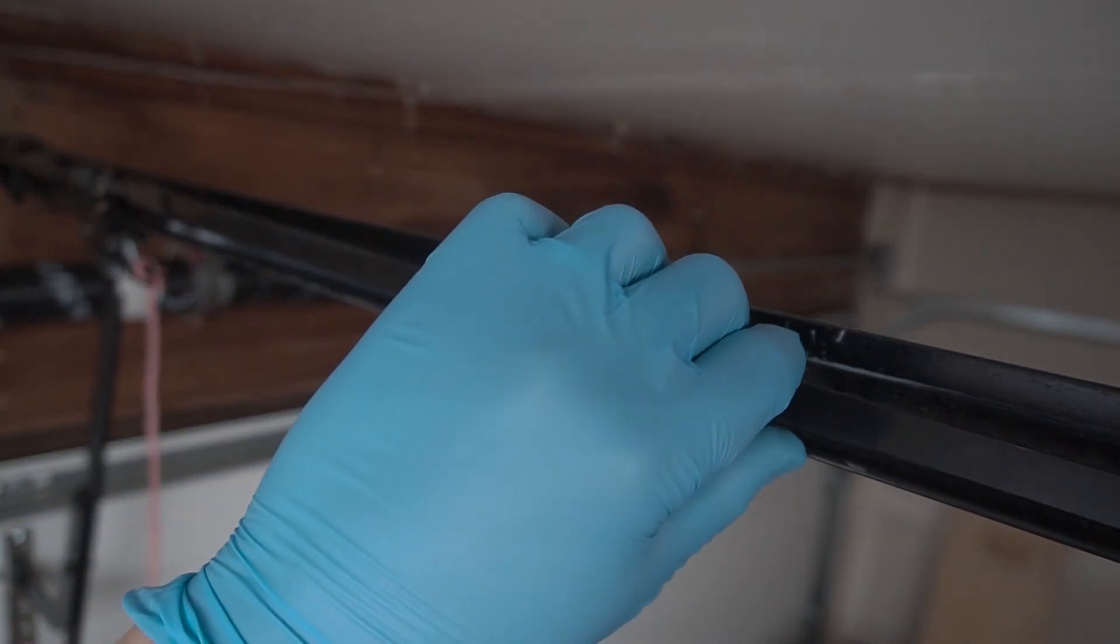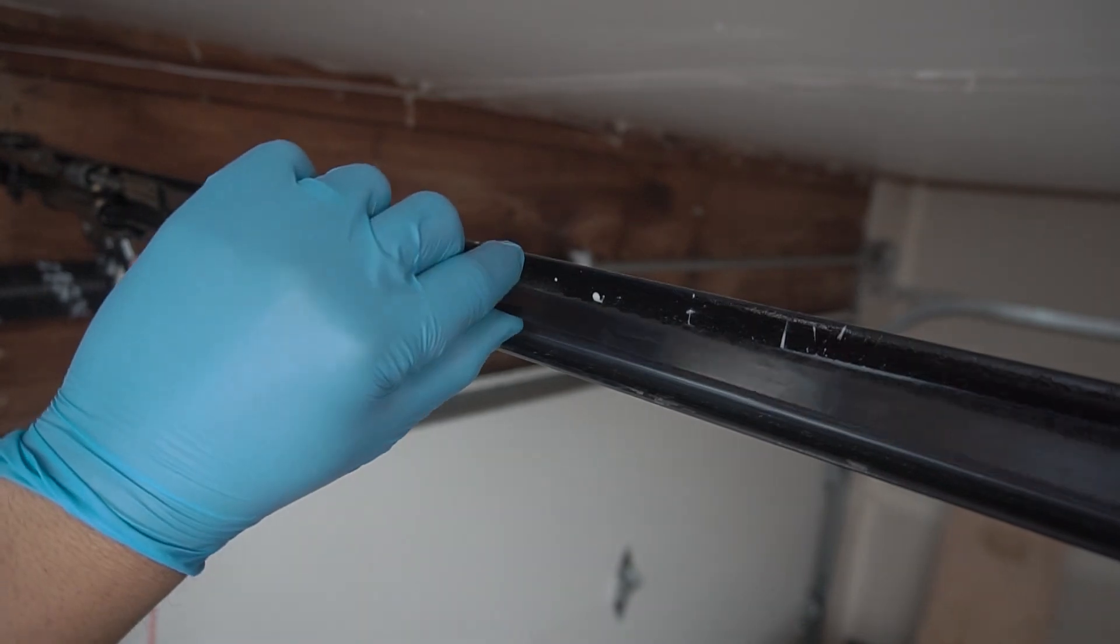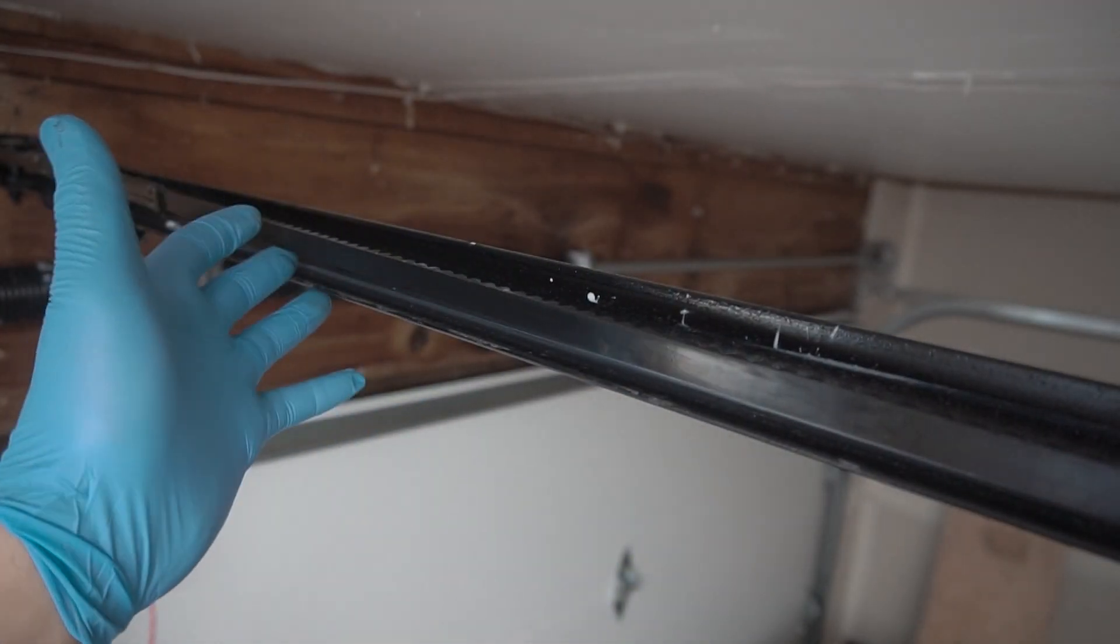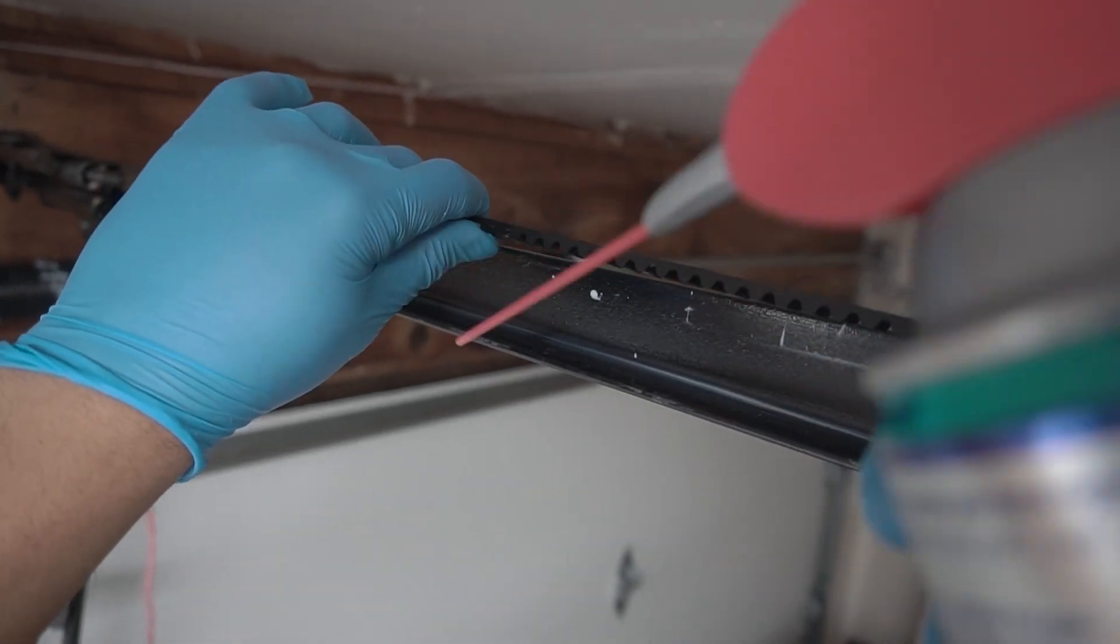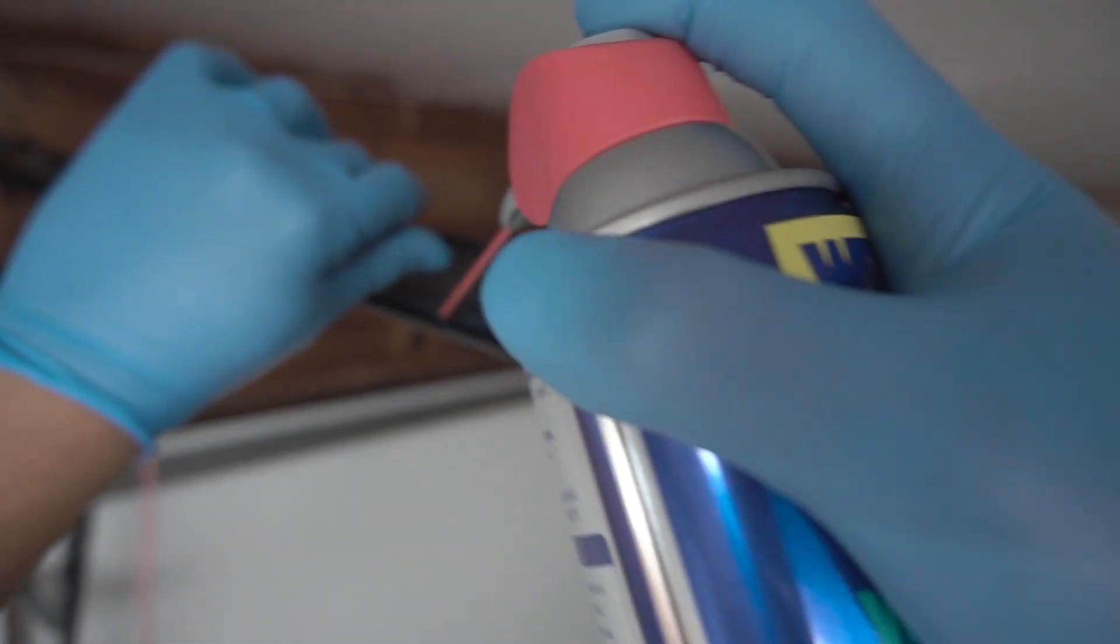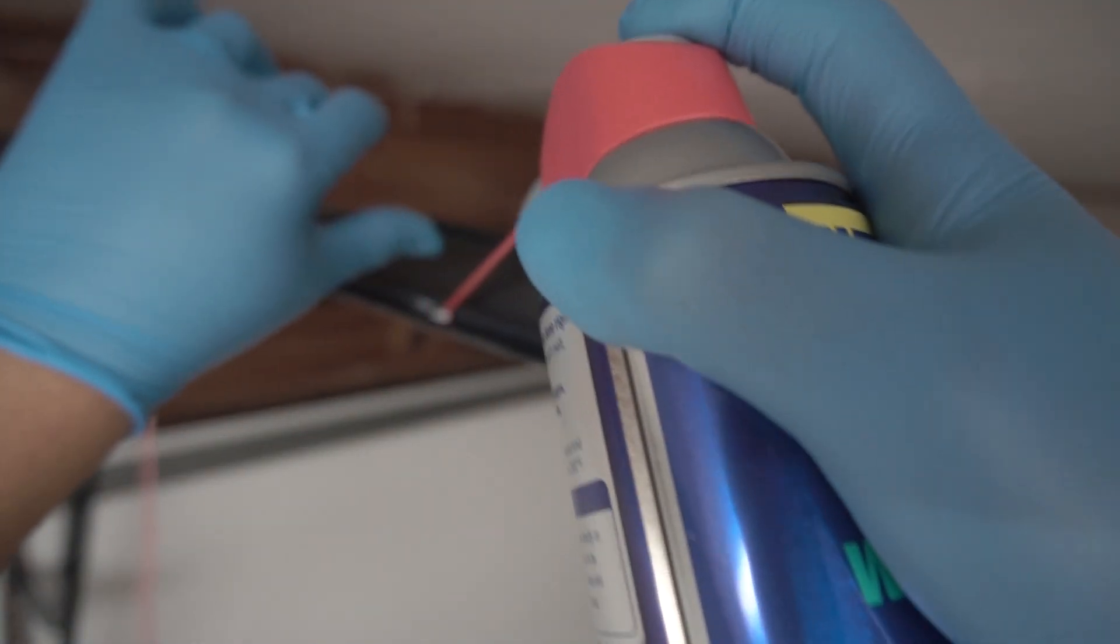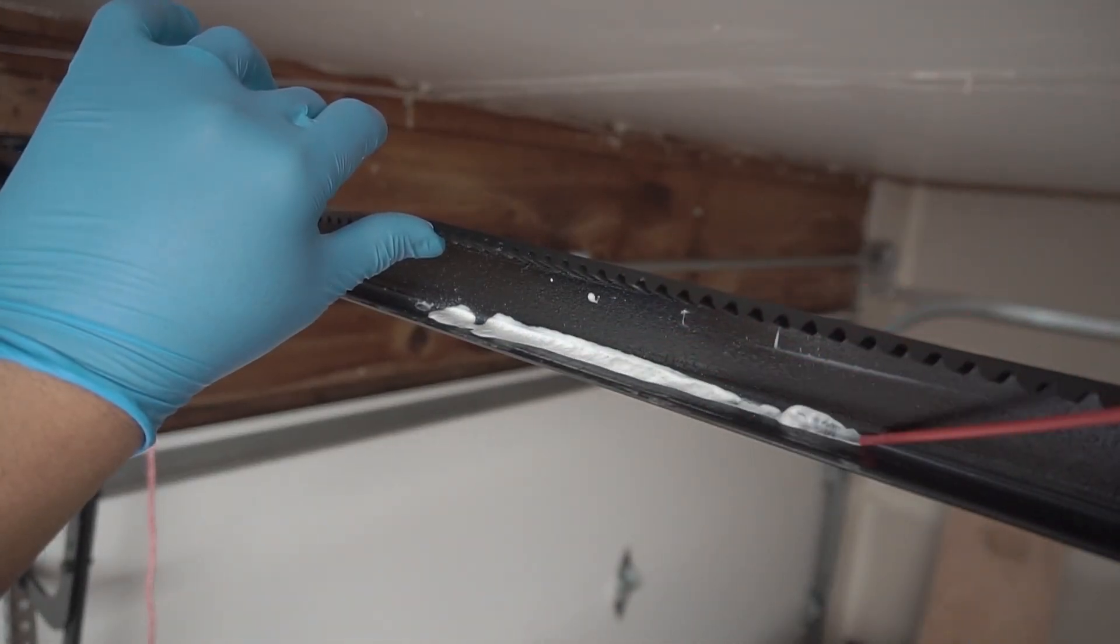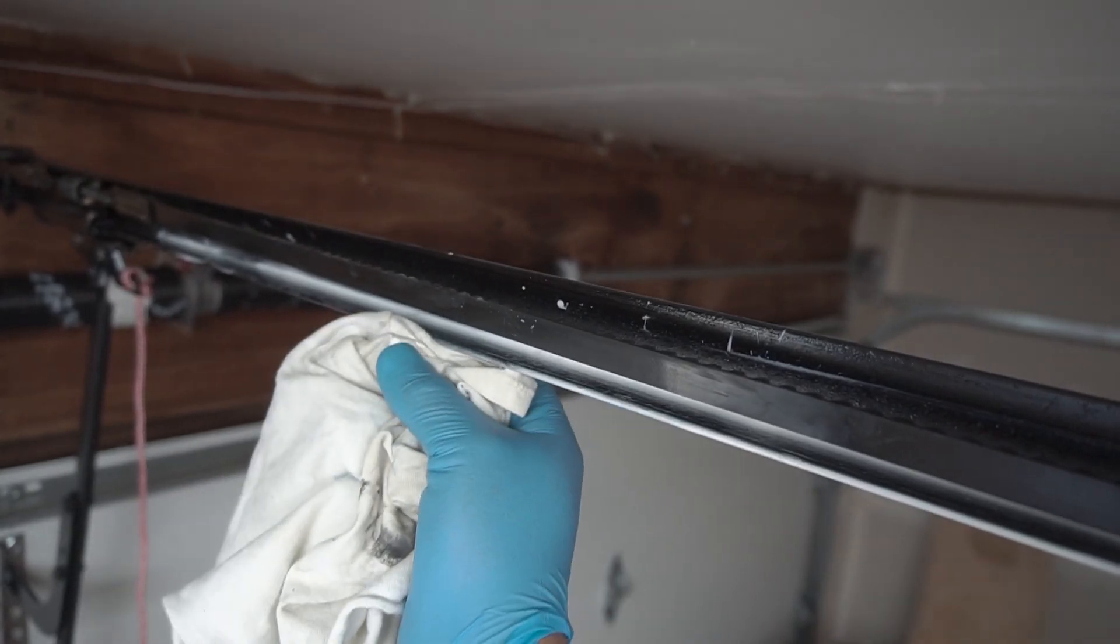You don't want to get any white lithium grease on the belt itself so what you can do is you can either lift it up like this or you can cover it with a piece of rag or plastic, but this should be easy, just lift it up like so and then just spray along this track. Make sure you do it on each side and just wipe down the excess.